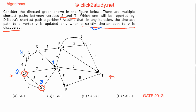Next, out of the remaining distances 4 and 7, we finalize A at distance 4. From A we check if distances can be updated. We can reach C at 4 + 1 = 5, which is a new discovery, so we set the distance to C as 5. Between C at 5 and D at 7, C is shorter, so we finalize C next.